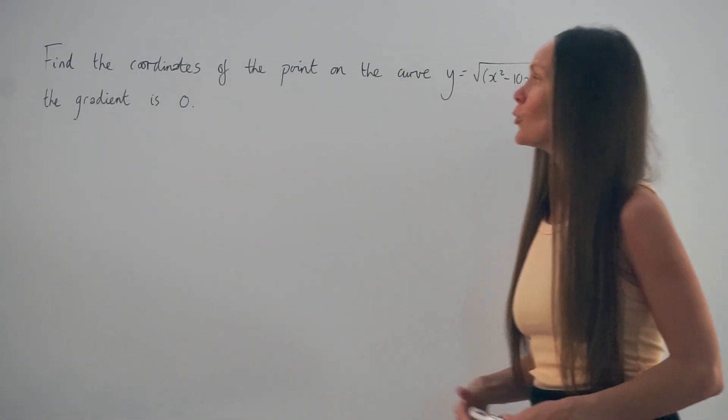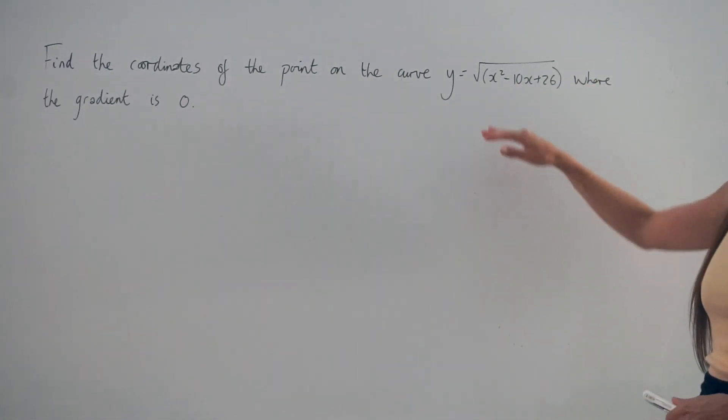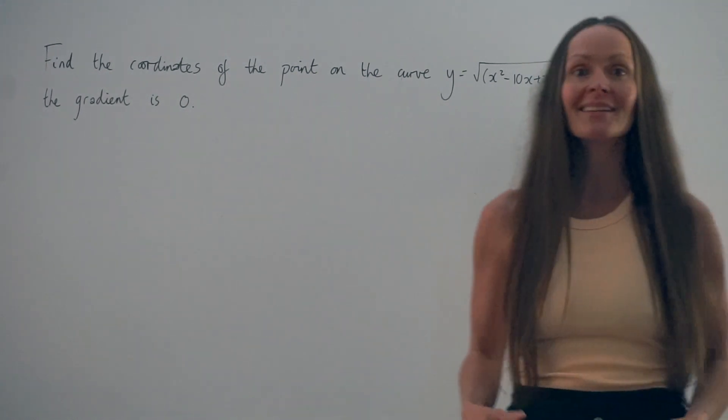In this question, we have to find the coordinates of the point on the curve y equals the square root of x squared minus 10x plus 26, where the gradient is 0.